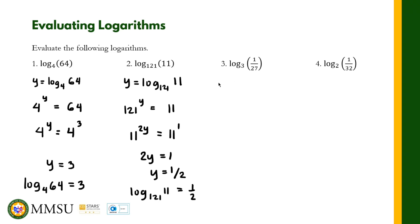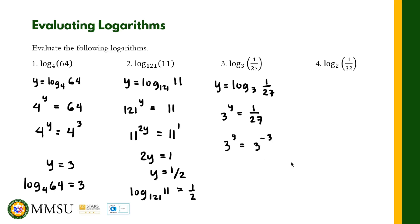For problem number 3, using the same steps, we have y equal to the logarithm with base 3 of 1 over 27. So we have 3 raised to y equals 1 over 27. We know that 1 over 27 is 27 raised to negative 1, and since 27 is 3 raised to 3, we can write 1 over 27 as 3 raised to negative 3 — because a negative exponent gives the reciprocal, this becomes 1 over 3 raised to 3, or 1 over 27. Since the bases are both 3, y equals negative 3. Therefore, the logarithm with base 3 of 1 over 27 is equal to negative 3.